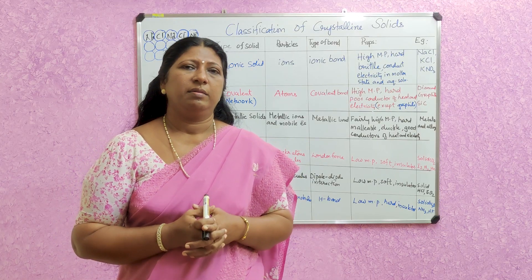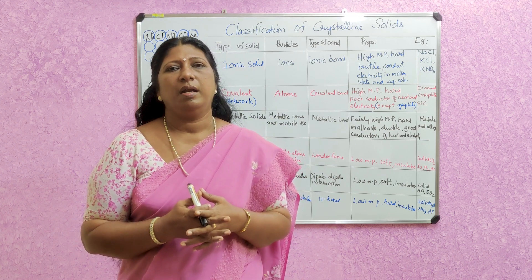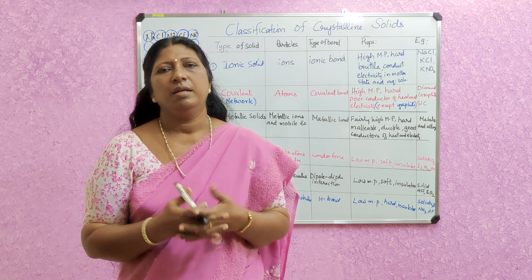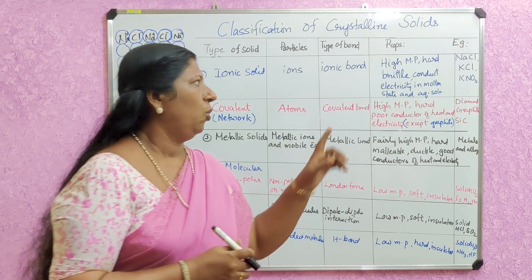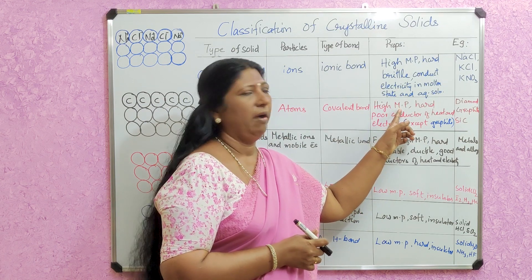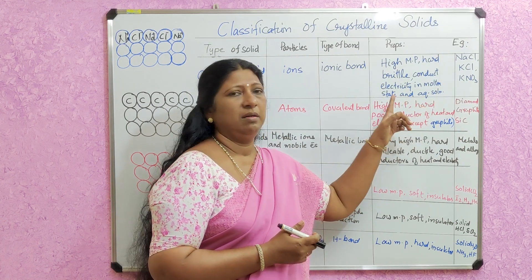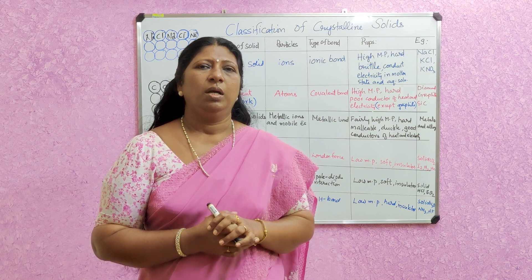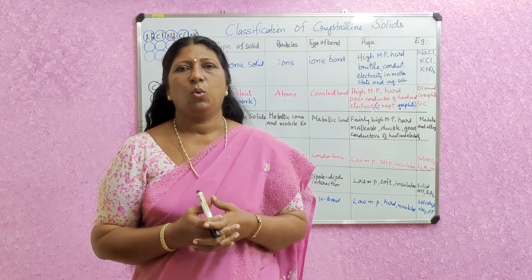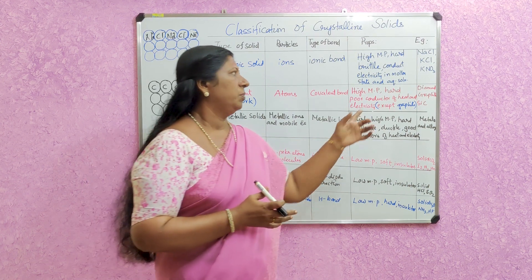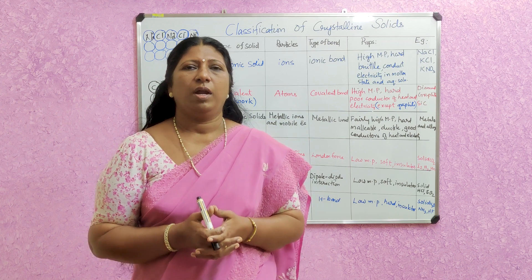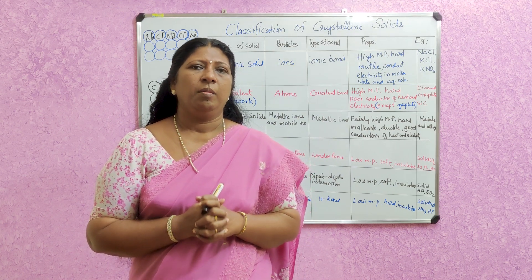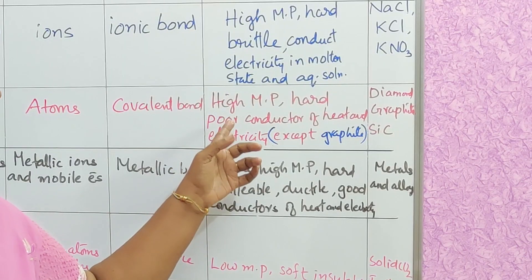For example, diamond has a very high melting point, and the melting point of silicon carbide is 2,730 degrees Celsius. The melting point of covalent solids is very high. Diamond is very hard and electricity cannot be conducted. One exception is graphite — graphite can conduct electricity. Graphite is also soft and slippery and is used as a lubricant. Overall, covalent solids are very hard with very high melting points.